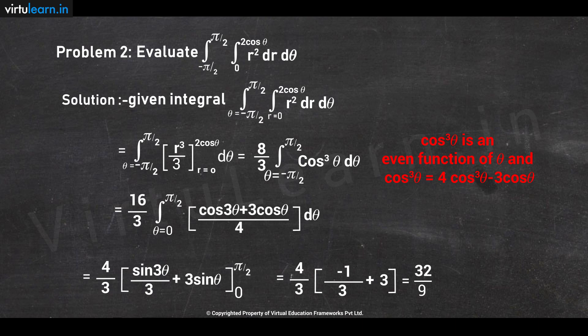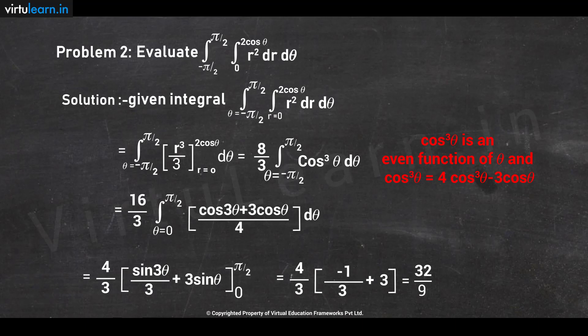The value becomes 4/3 · (−1/3 + 3), which on simplification gives 32/9. We may also notice from the figure that r = 2cosθ is a circle with its center on the positive x-axis at (1, 0). θ changes from −π/2 to π/2 since the circle lies only in the first and fourth quadrants.